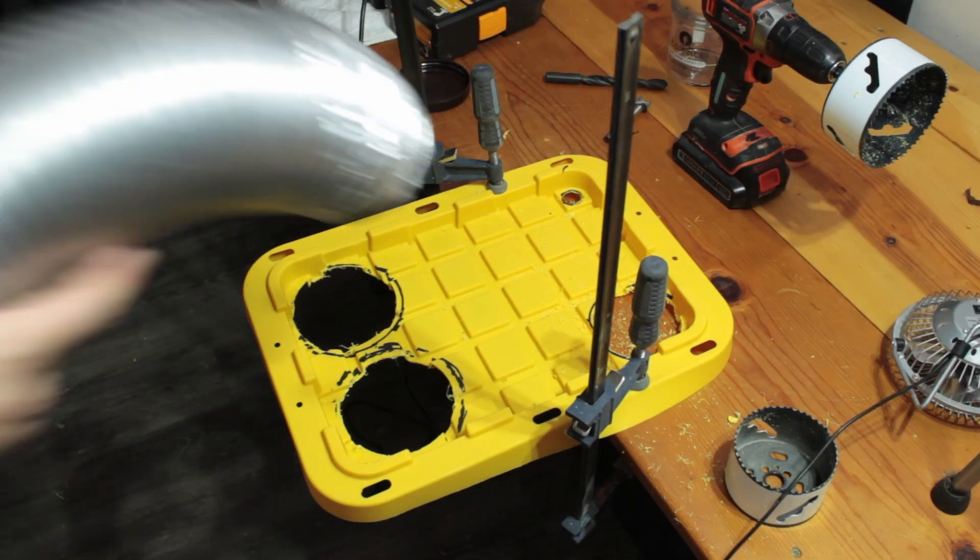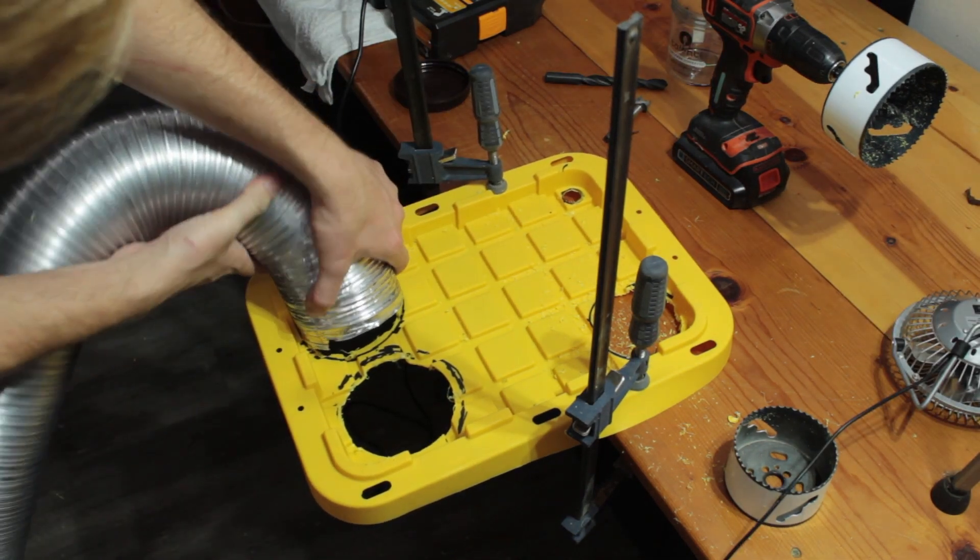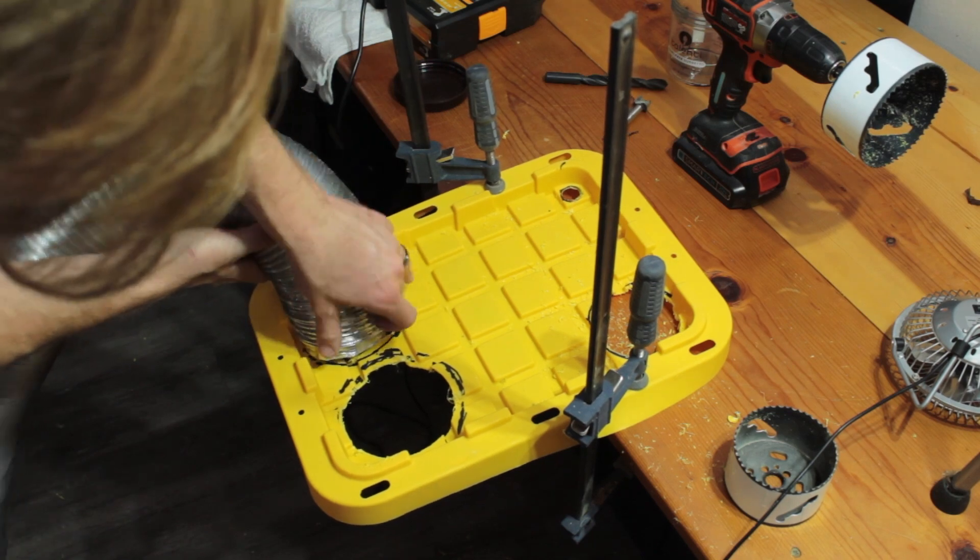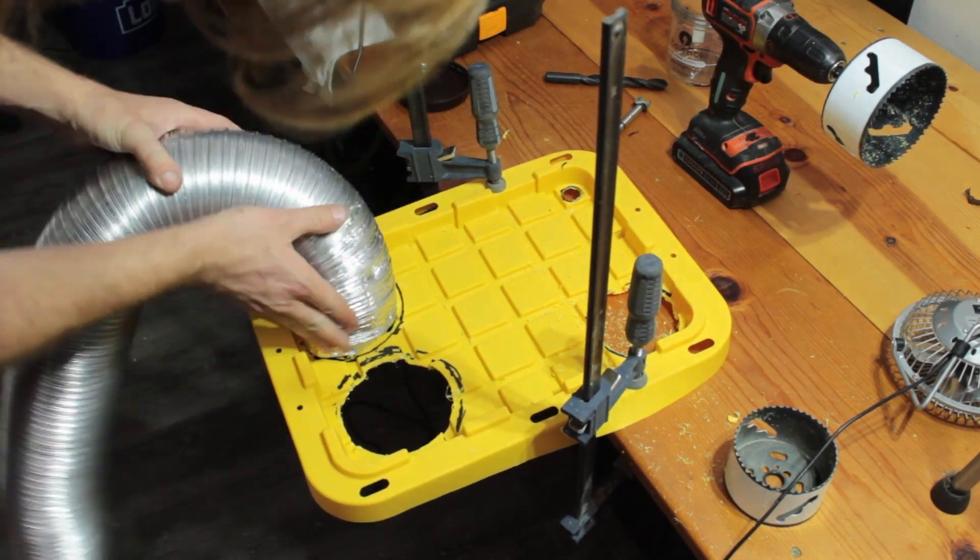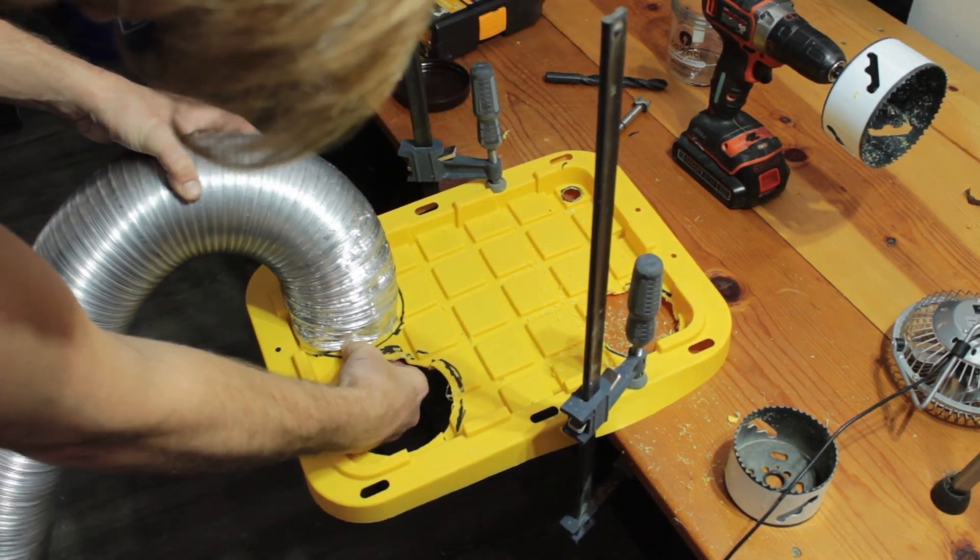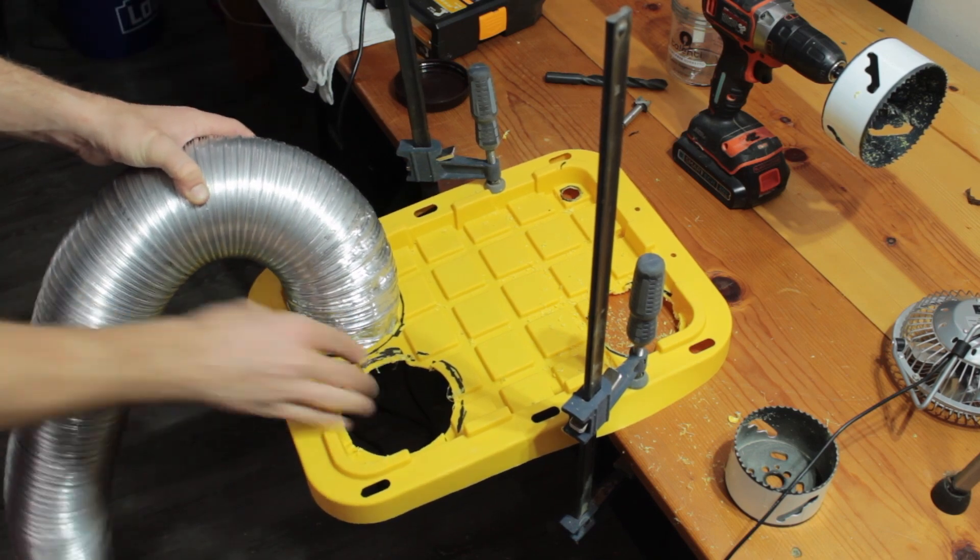Now that all the holes are cut, it's time to start affixing the parts. We'll start by squeezing the aluminum ducting into the hole, then make sure to bend it outward on the underside to help it stay in place.